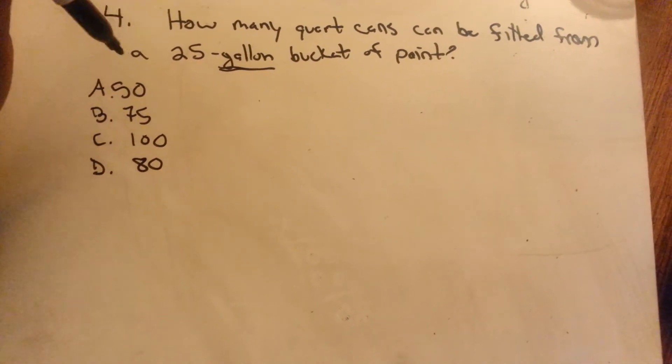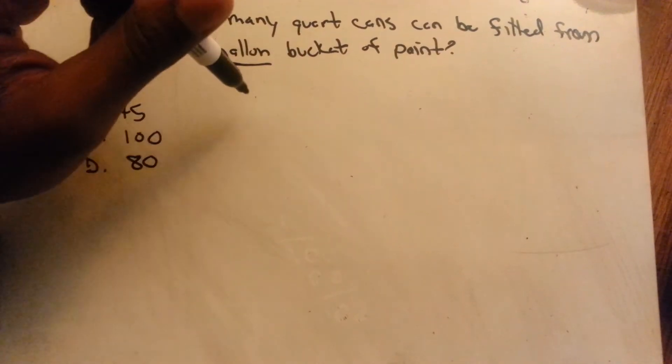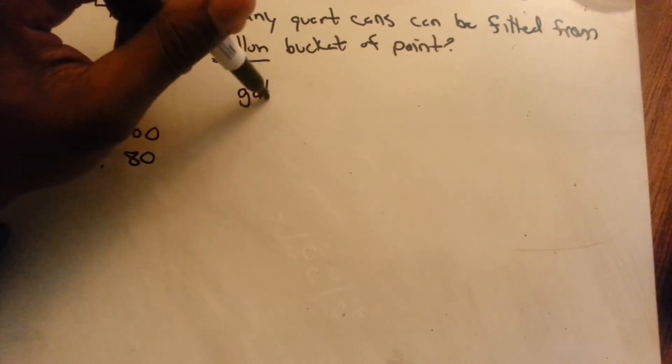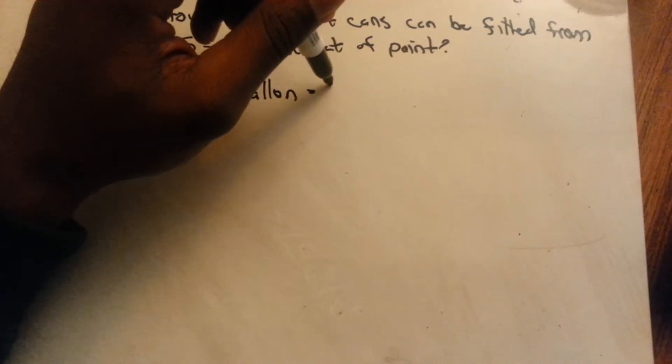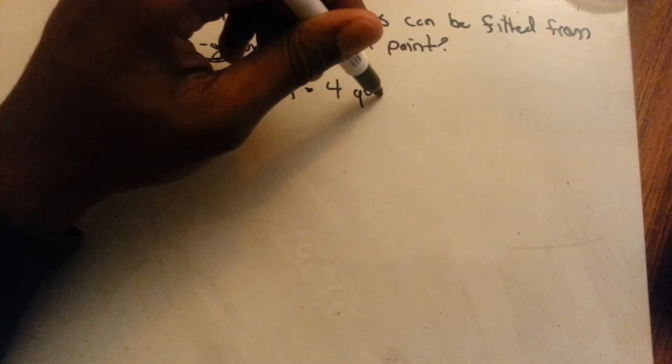And if you don't know, there are four quarts in a gallon. One gallon equals four quarts.